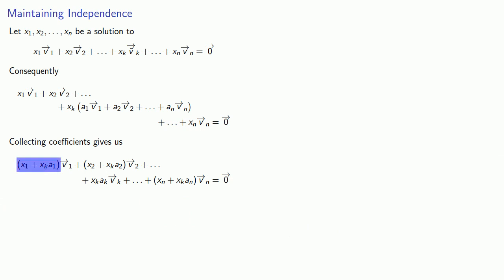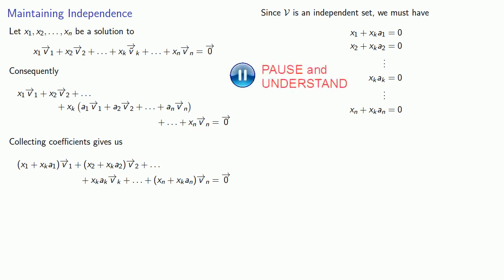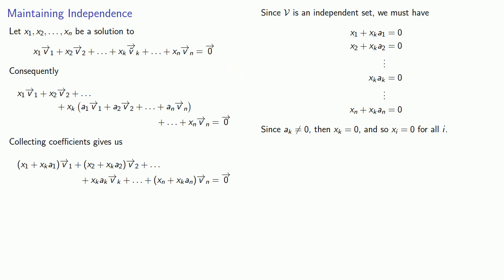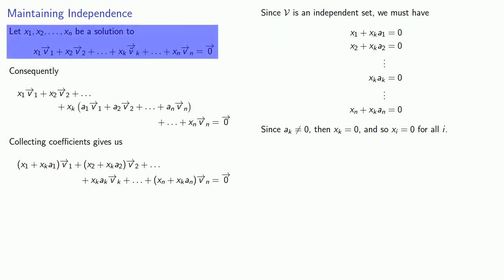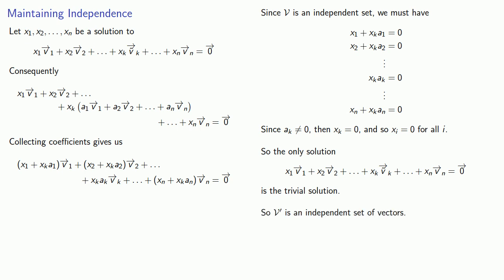So x1 plus xk·a1 is 0, x2 plus xk·a2 is 0, and so on, including xk·ak equals 0. Our underlying assumption is that ak is not equal to 0, so that tells us xk equals 0. But if xk equals 0, then x1, x2, and xi equal 0 for all i. That means the only solution to the linear combination equal to 0 is the trivial solution, so v prime is a set of independent vectors.